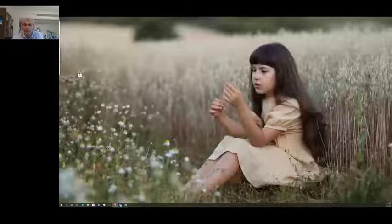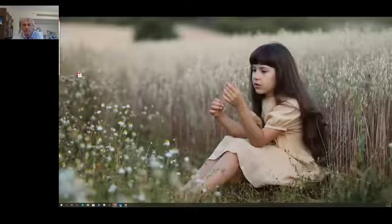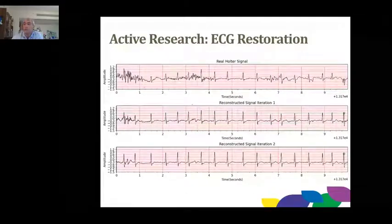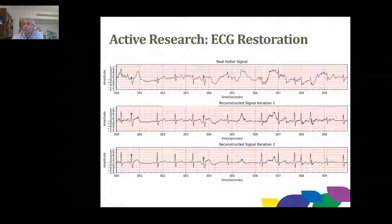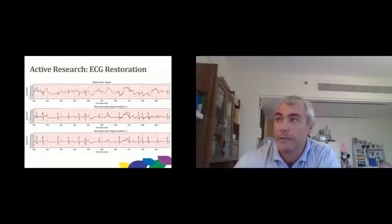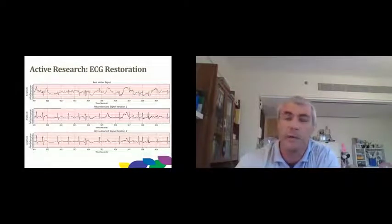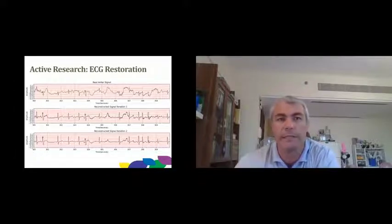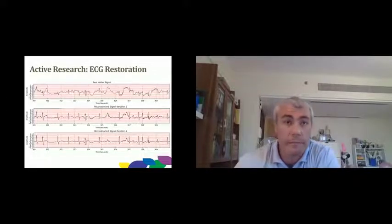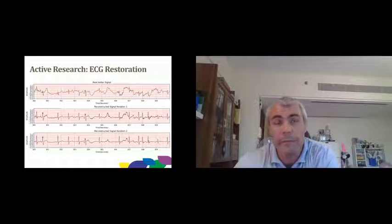A typical Holter ECG signal is like this, and doctors have a hard time identifying which is a beat and which is an artifact. We talked with cardiologists here and most of the time they ignore these problematic regions — meaning they are ignoring arrhythmic beats. These problematic regions can be as high as 40 percent of the whole signal.